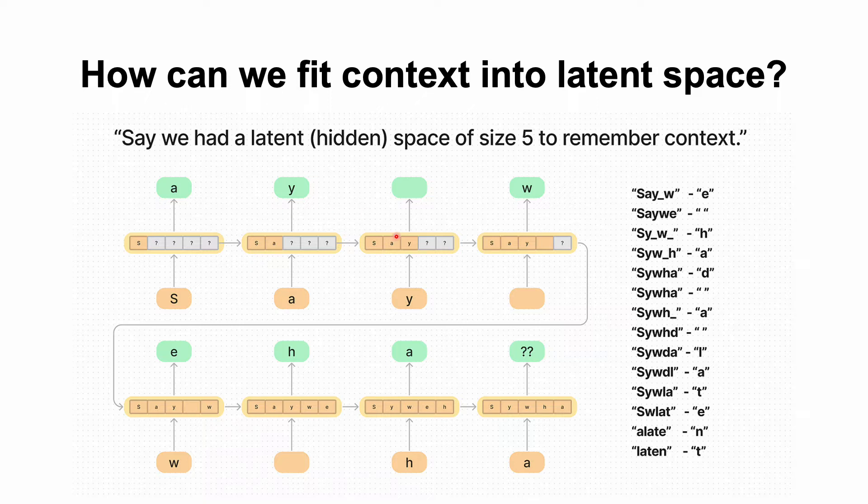Gated recurrent units or long short-term memory models have actually provided gating mechanisms within the RNN cell to decide what to remember, what to forget from the sequence as you go along. And so you can only fit so much context into a hidden state no matter how well you gate, filter, and remember, especially if you only have a size 5 latent space.